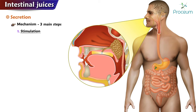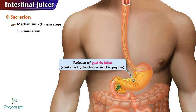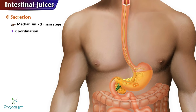Stimulation: the secretion of intestinal juices is stimulated by the presence of food in the digestive tract. When food enters the mouth, it stimulates the salivary glands to secrete saliva, which begins the breakdown of carbohydrates. When food enters the stomach, it stimulates the release of gastric juice, which contains hydrochloric acid and pepsin.